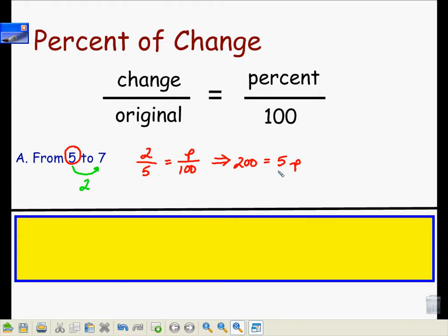If I divide both sides by 5 so that I may get my P by itself, I get 40 is equal to P. But what is P? What does it represent? It represents a percent. So the result is a 40%, and since it is positive, increase.